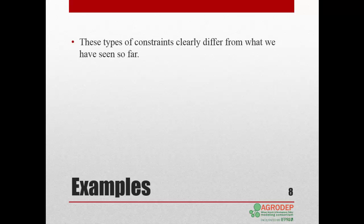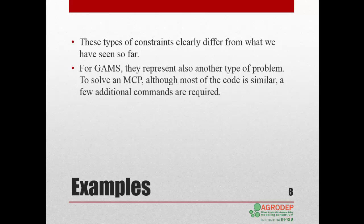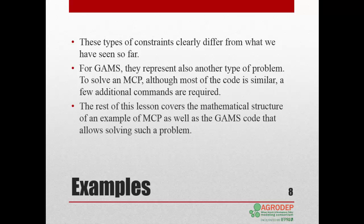As you may be aware, these types of constraints clearly differ from what we have seen so far. For GAMS, they represent a different type of problem. While most of the code is similar to non-MCP programs, a few additional commands are required to solve an MCP. In the rest of this lesson, we will cover both the mathematical structure and the GAMS code of an example of a mixed-complementarity problem.